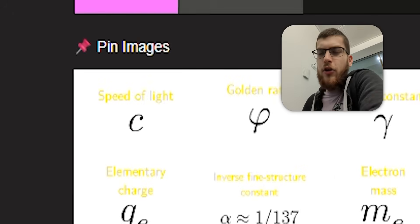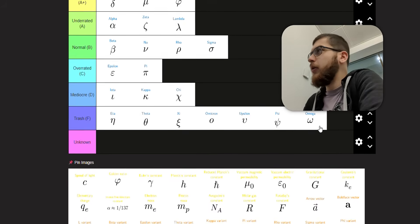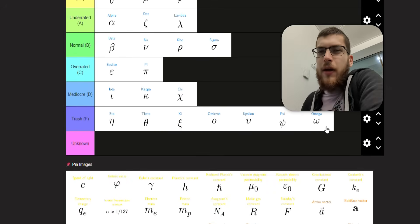Next, we've got psi, which is the devil's pitchfork, and we don't support the devil on this channel. So that's in F tier. And then we've got omega, which kind of looks like something inappropriate. And it can also be confused with a W. So I'm going to put that in F tier.